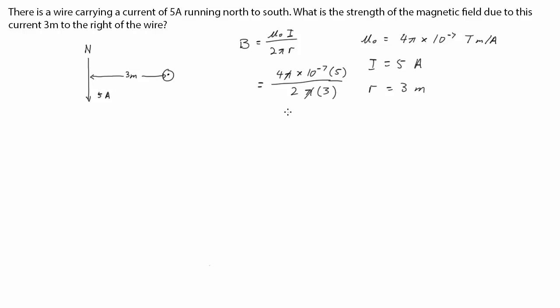The π's cancel, and there's a common factor of 2 as well. And we end up with 3 times 10 to the negative 7 teslas.